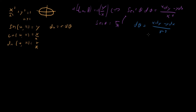So du = r dθ expressed in terms of things we know better is: du = (x dy − y dx) / r², times the r out front, giving du = (x dy − y dx) / r.